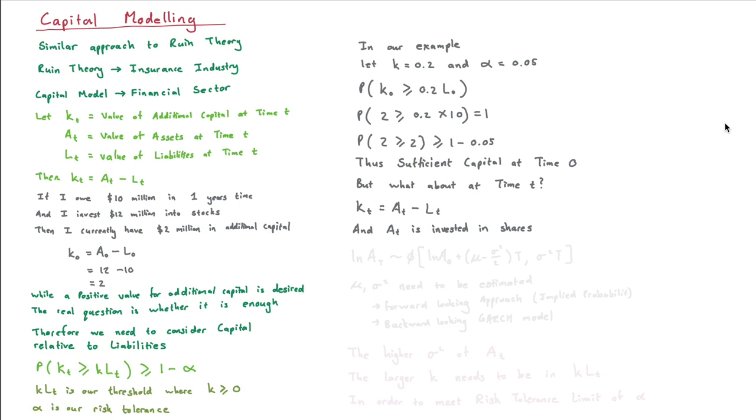But now we might want to ask ourselves, we've got enough capital at time zero, but will we have enough capital at time T? We know that the additional capital at time T equals the assets at time T minus the liabilities at time T. Since the assets have been invested in shares, we know their value isn't going to stay static. For anyone who's traded the stock market, you know these prices bounce up and down and go all over the place.